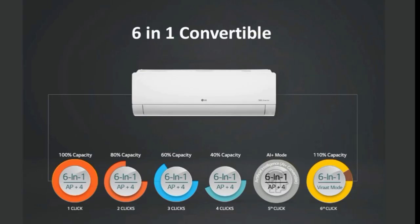It's a 6-in-1 convertible AC. You can use the ISA button on the remote to adjust capacity. If you press the button once, the AC runs at 100%. Press 2 times and the AC runs at 80%. Press 3 times and the AC runs at 60%. Press 4 times and the AC runs at 40%. This allows you to match the AC capacity to your room needs manually.